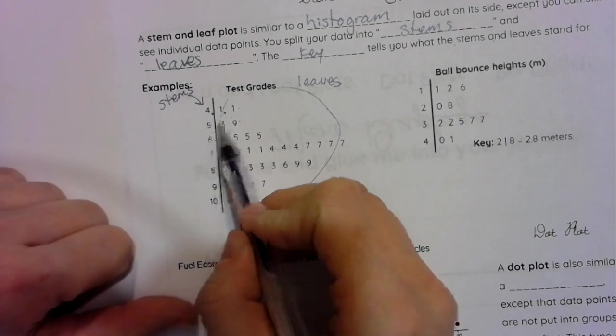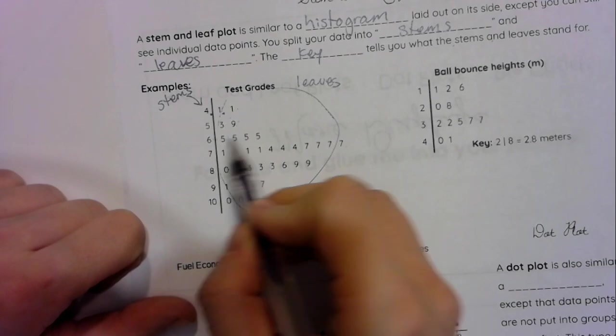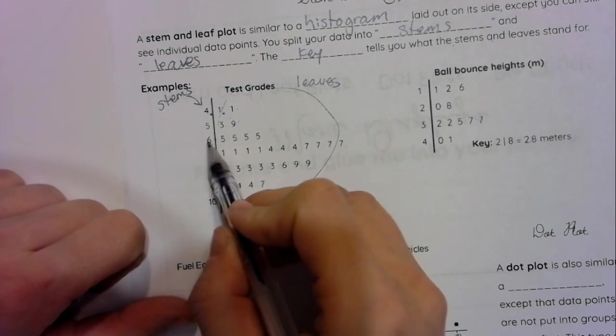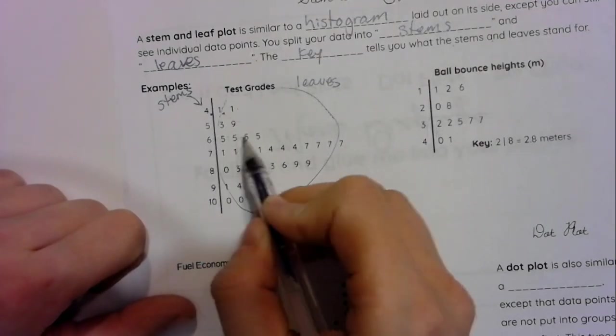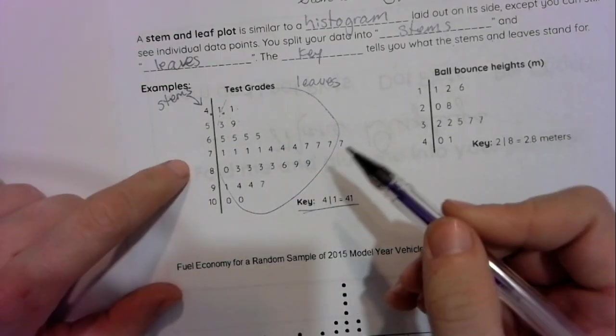Then we have 53, 59, 65. Oh, 65 is there four times. 65, 65, 65, 65.